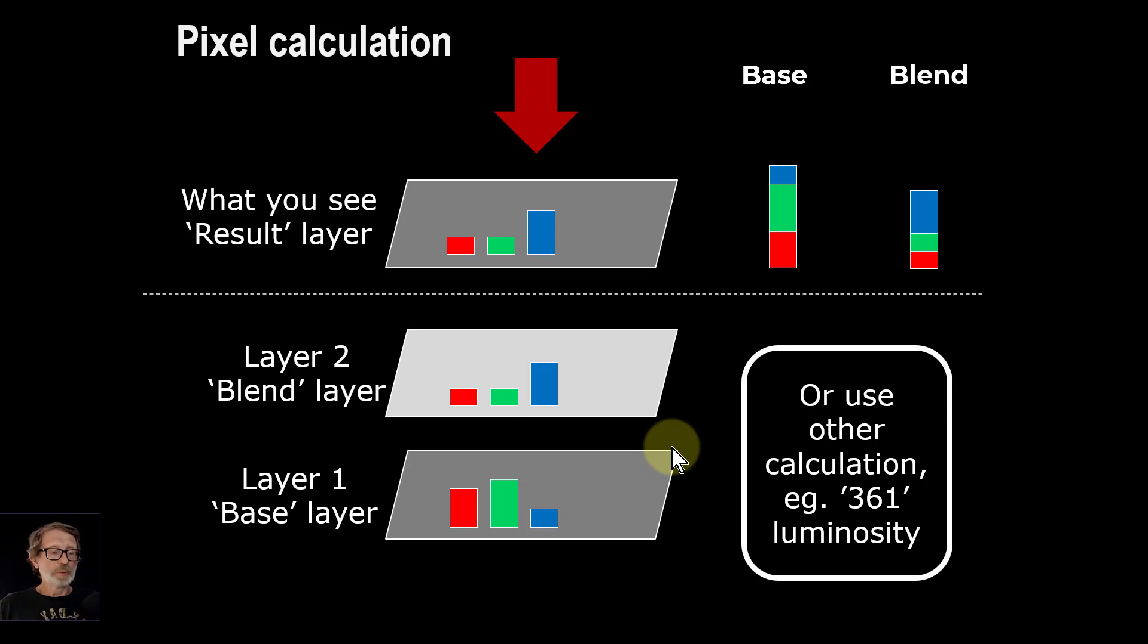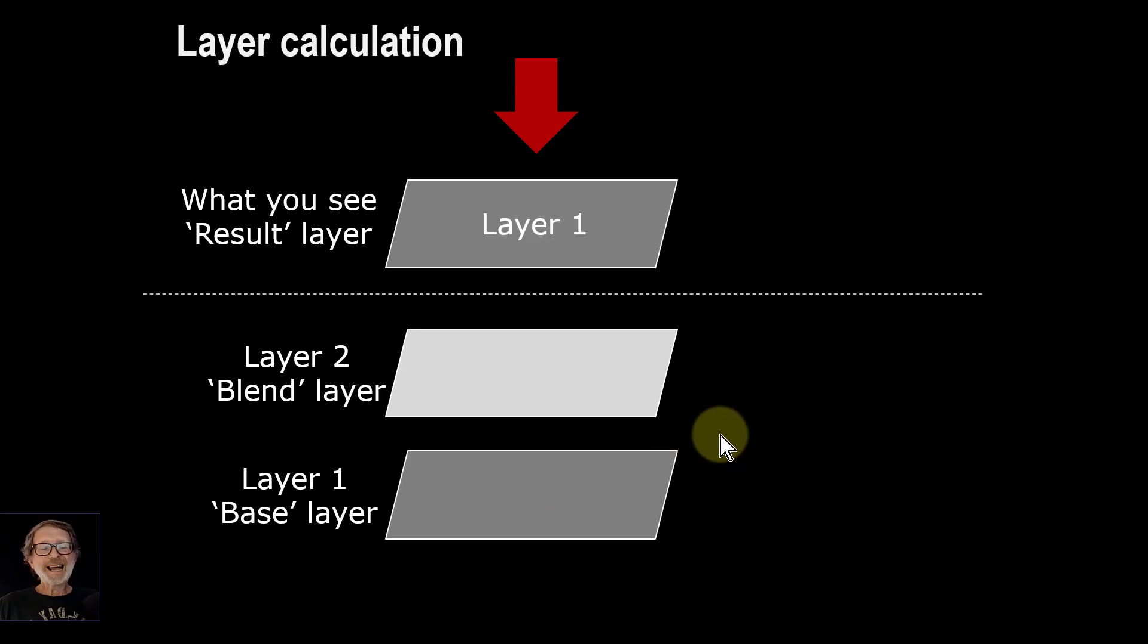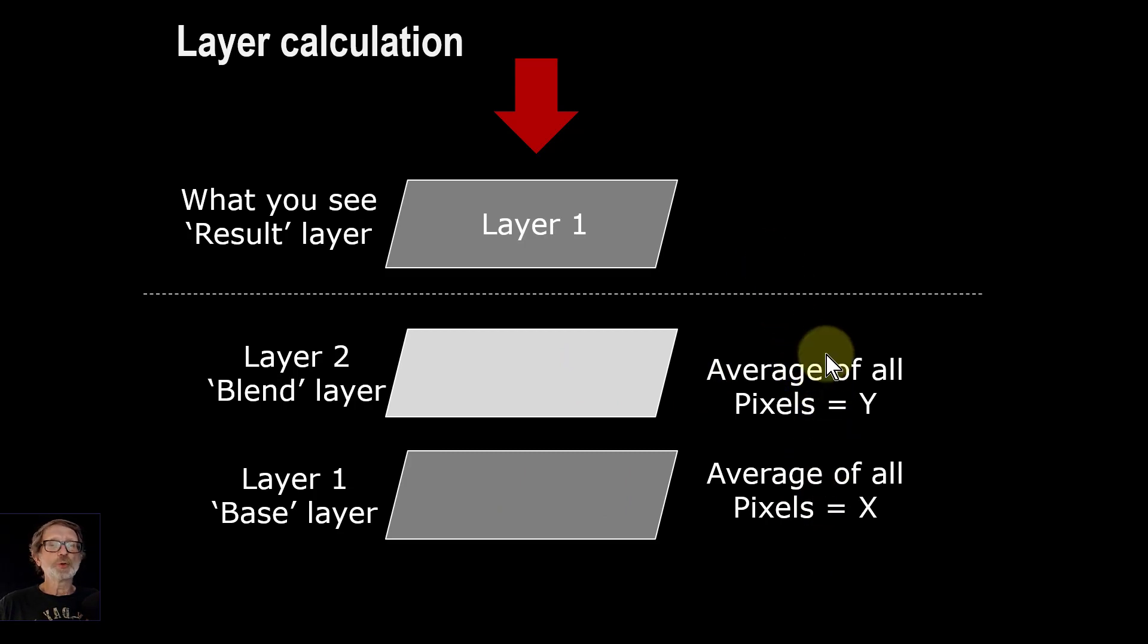You can also get layer calculations, and this you don't actually see it in the blend mode, but this could be done, and when we get on to the more advanced stuff we may come to this. So you could say, well, do we just average all the pixels here and then average all the pixels there, and then we decide which of those we're going to choose? So we might say, well, we'll have the smaller one, so we'll use layer one because the average is less for the whole thing.